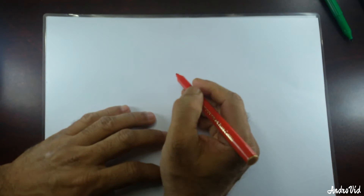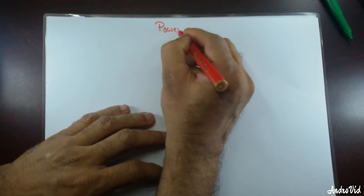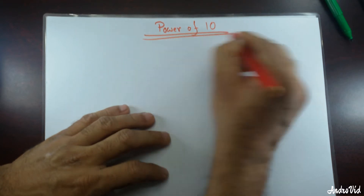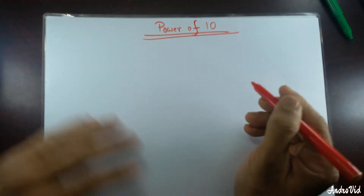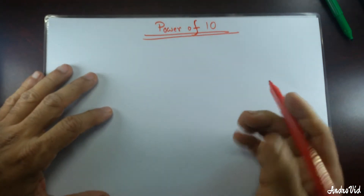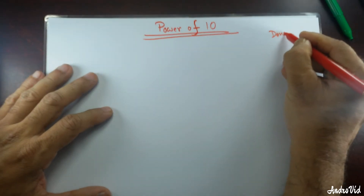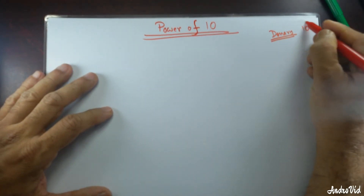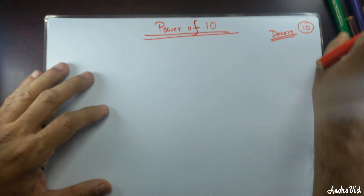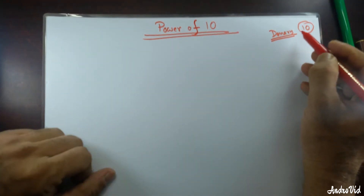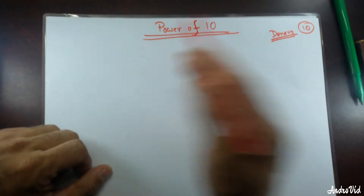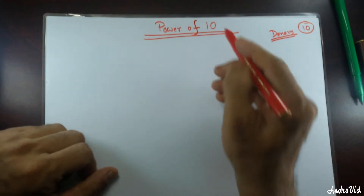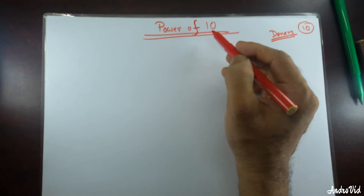Good morning students. Today I'll give you a lecture on a very interesting concept: Power of 10. Ten is a very powerful number. Why is 10 a very powerful number? In daily life, the number system we use is called the denary system. Denary system means base 10. Those students studying computing and computer science know that the language of computers is written in binary — two digits. But in daily life, when you buy something with money, we use base 10, the denary system.